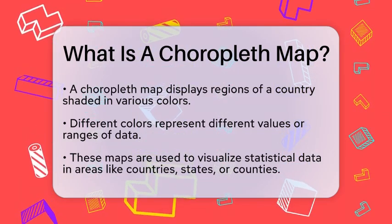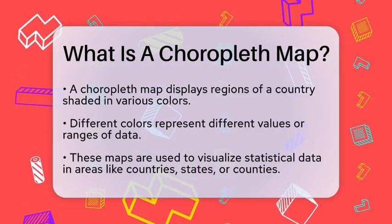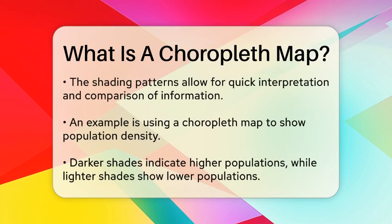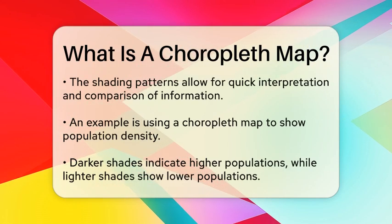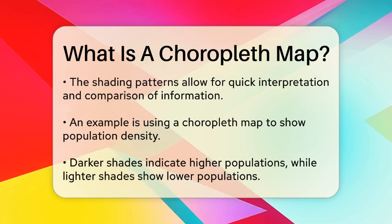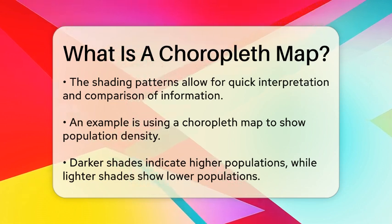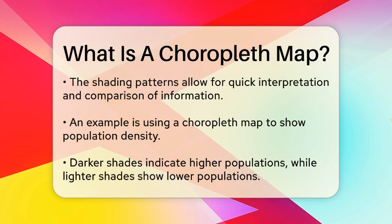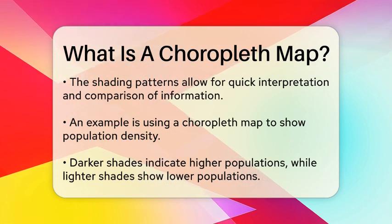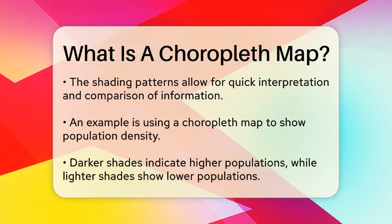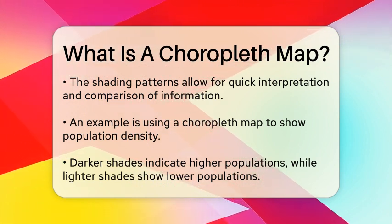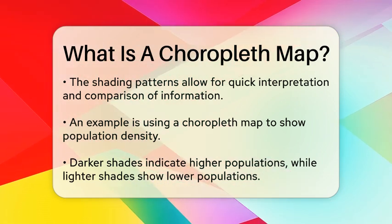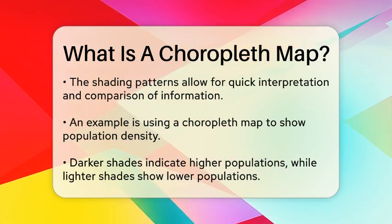Choropleth maps are used to display statistical data through various shading patterns or colors within predefined areas, such as countries, states, or counties. The colors represent different values or ranges of data, allowing viewers to quickly interpret and compare information across different regions.